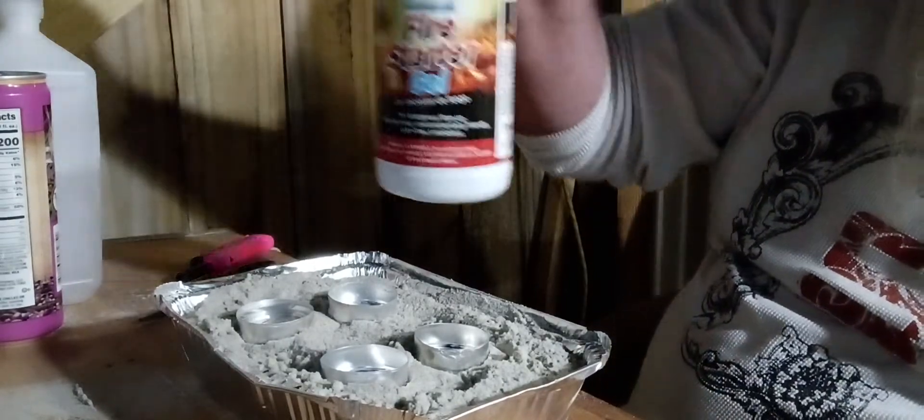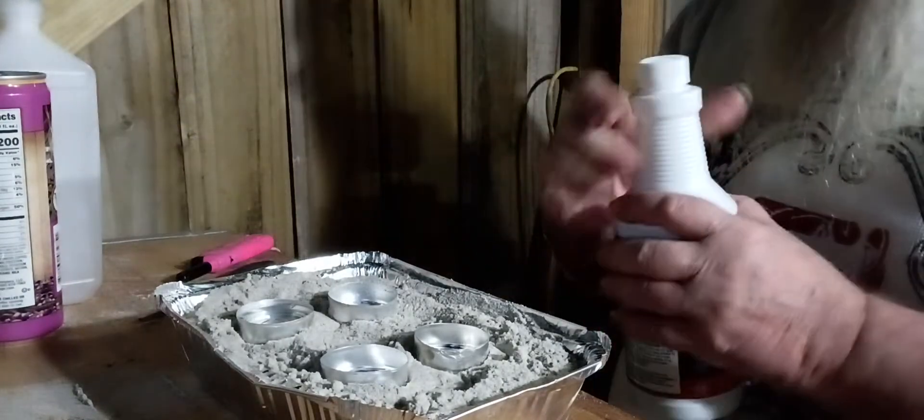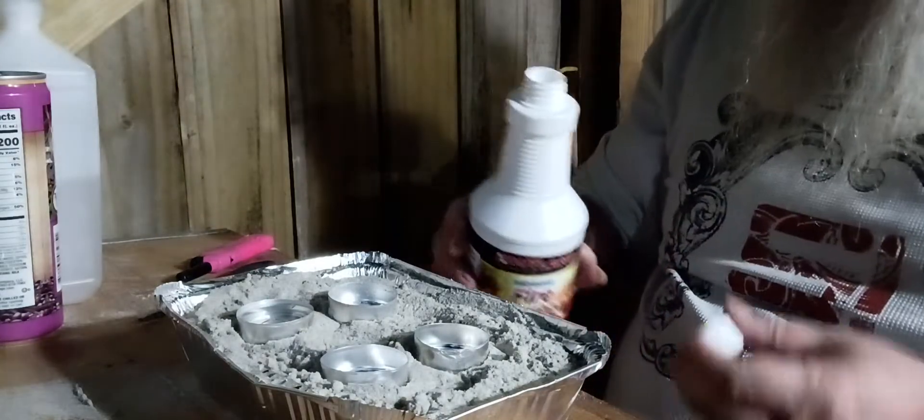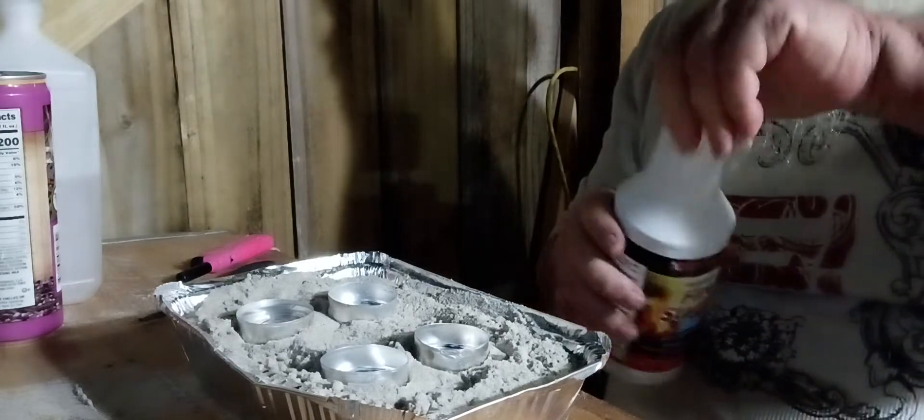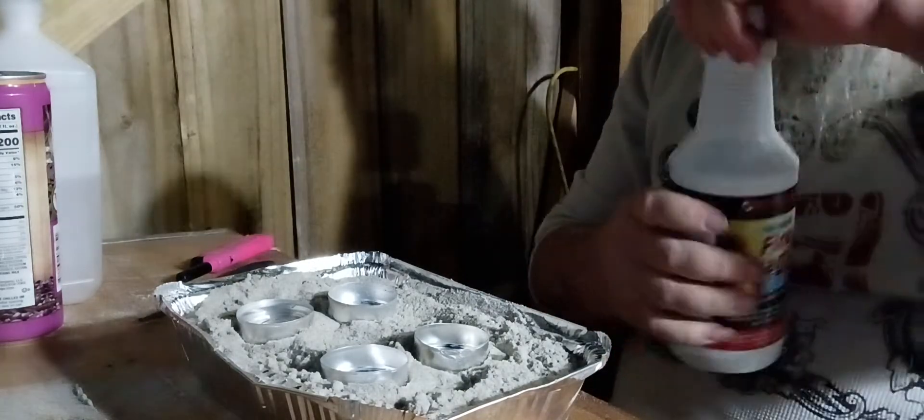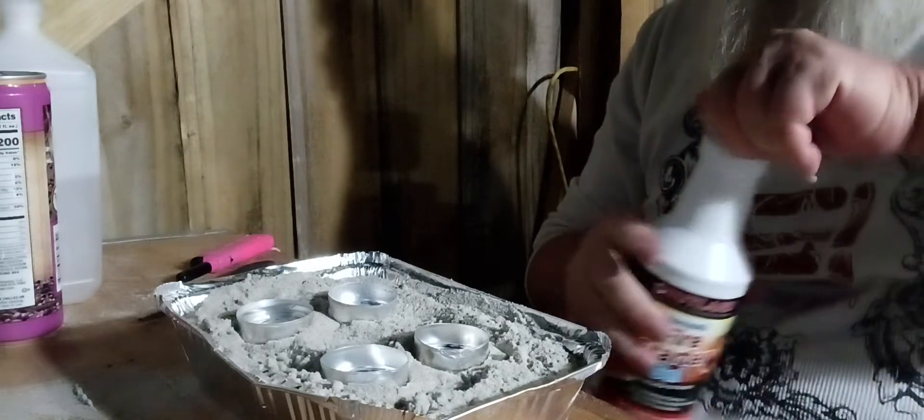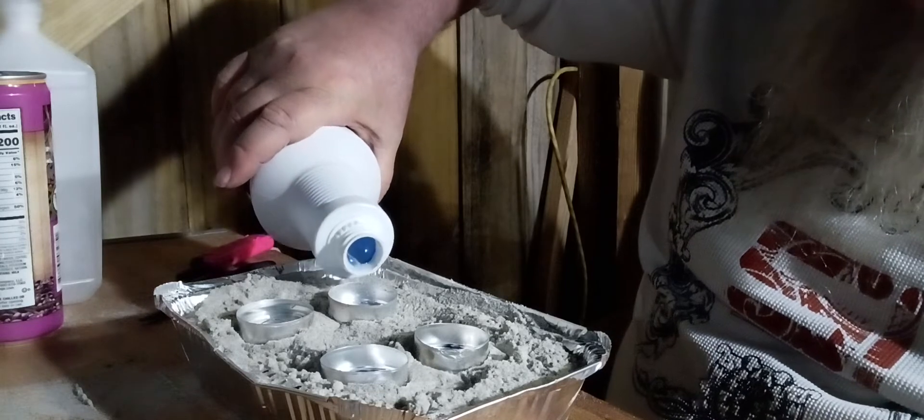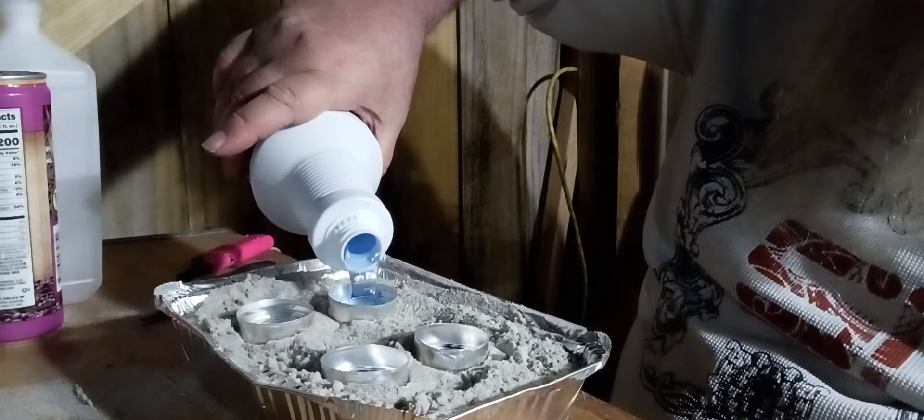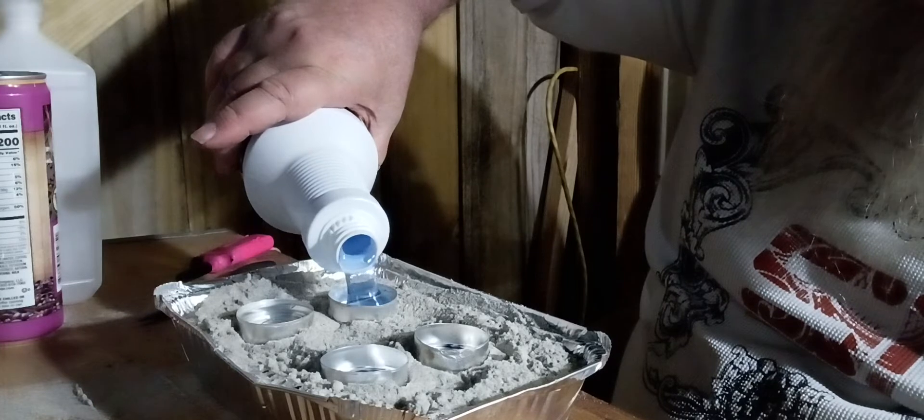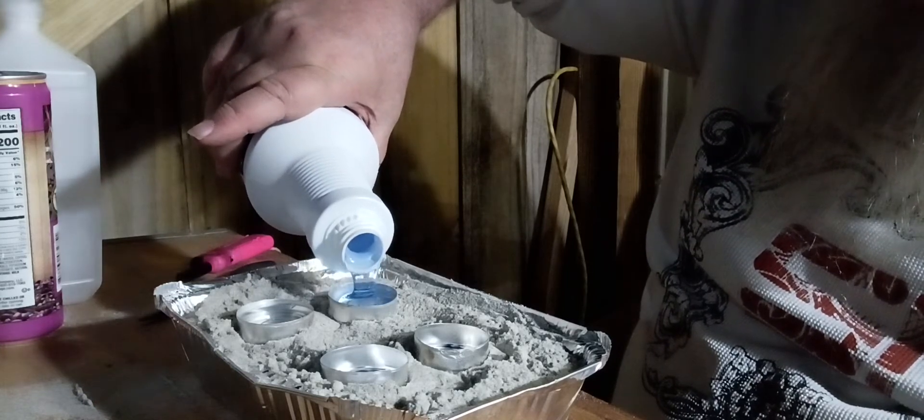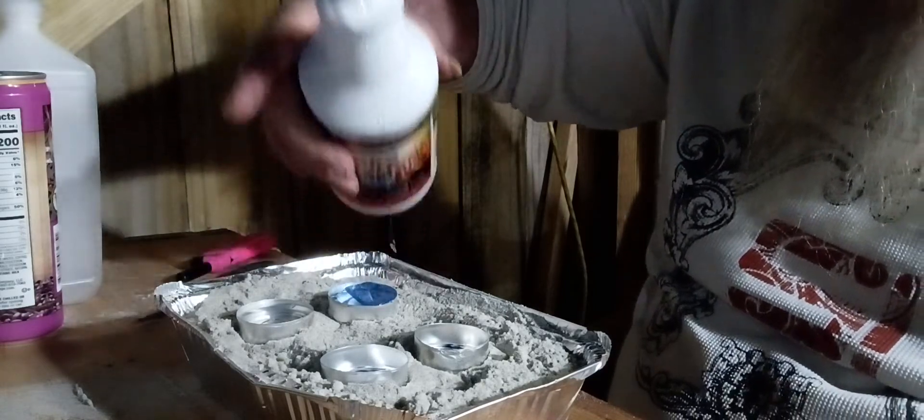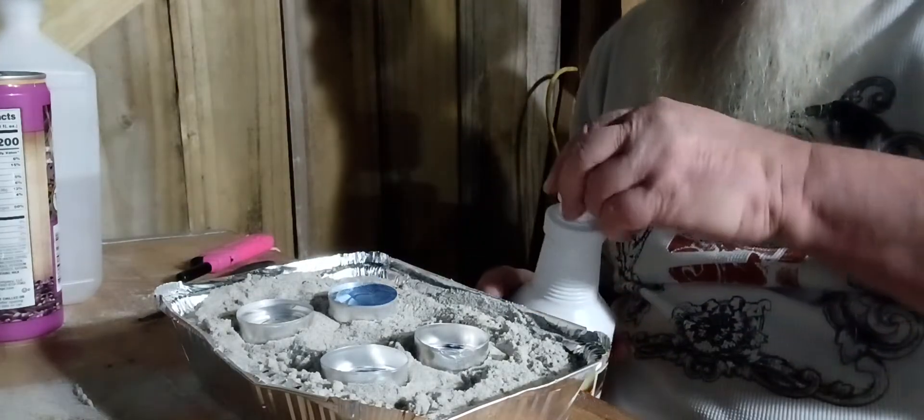We'll try to use this Rutland fire starter. This is a gel. Maybe I should shake it up. I don't know if it makes a difference or not, but we'll try it that way. We'll go ahead and fill this up. It's a pretty blue color. This might be a little bit more.